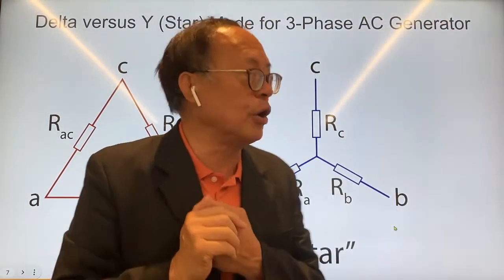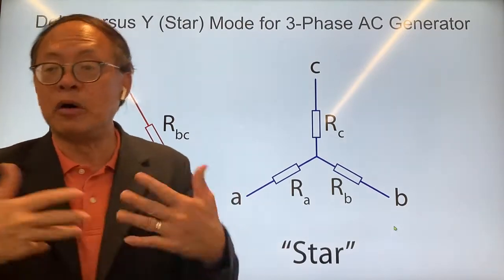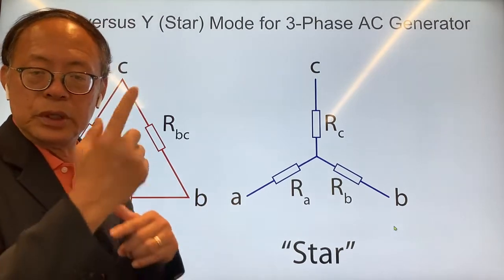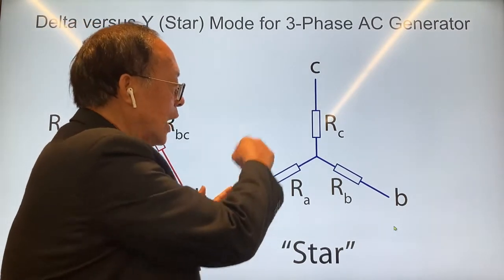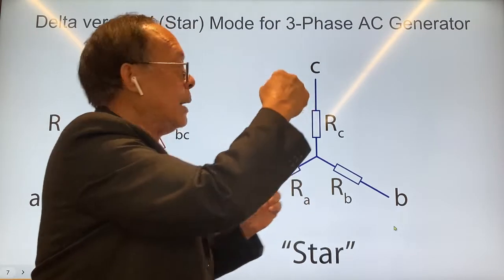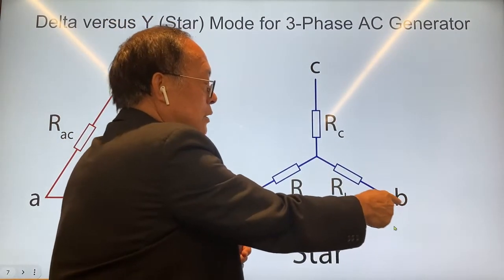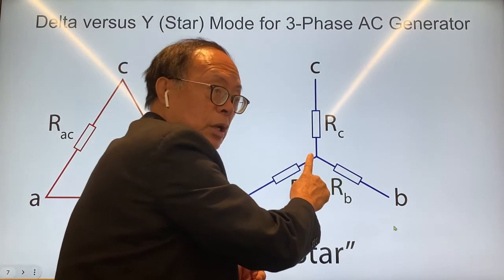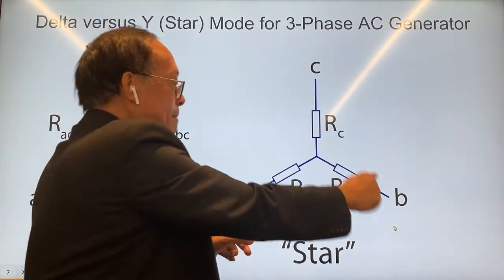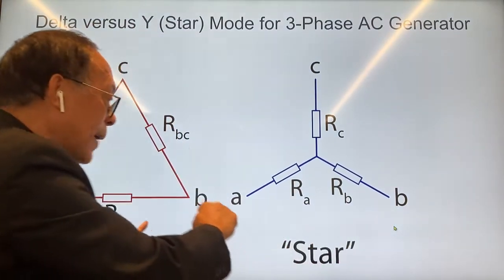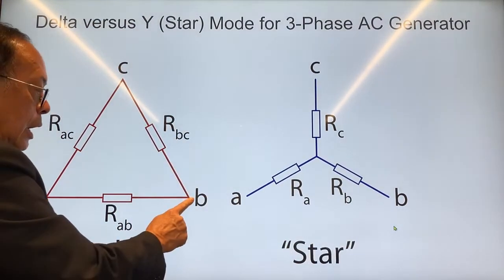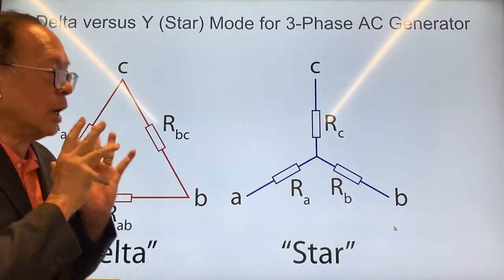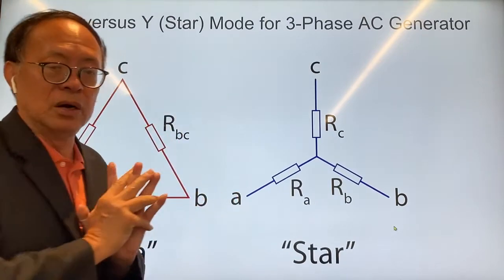I would prefer to use the Y mode because that would generate more voltage. The way you connect here is that A1 connects to A2, A2 connects to neutral, B1 connects to neutral, and C1 connects to C2 which is also the neutral. This way, the voltage between A and B is almost twice the voltage when connected in the delta mode, so you produce more voltage in Y mode — and that's what we prefer.